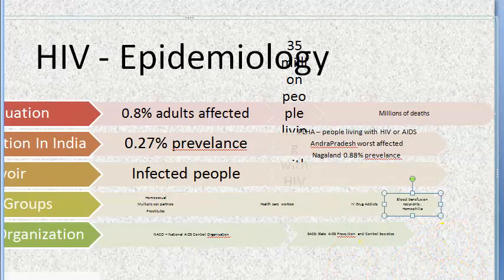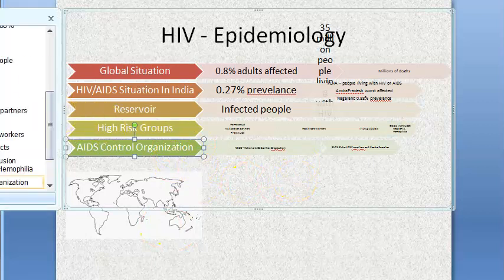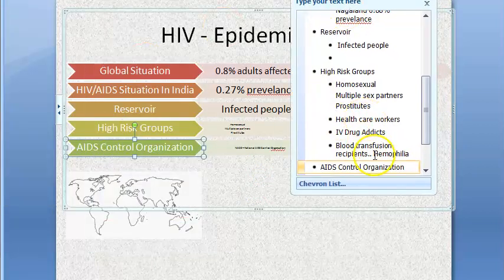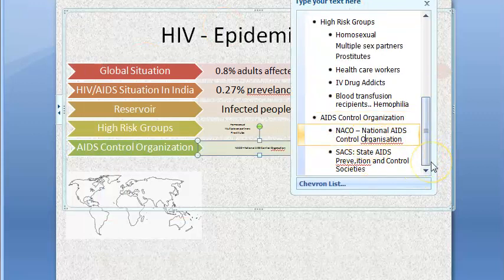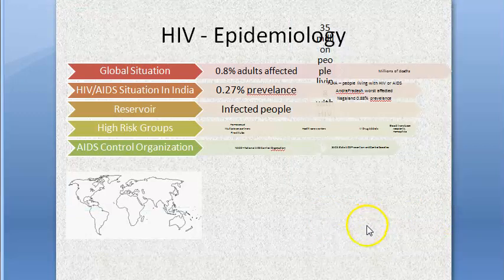People receiving blood transfusions, such as those with hemophilia or thalassemia, are also high-risk. For AIDS control, at the national level we have NACO (National AIDS Control Organization), and at the state level we have SACS — State AIDS Prevention and Control Societies.